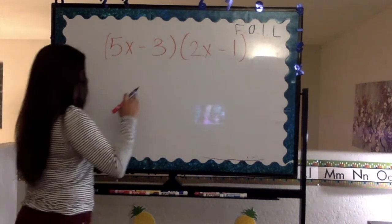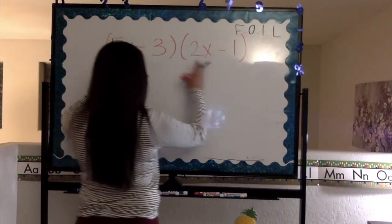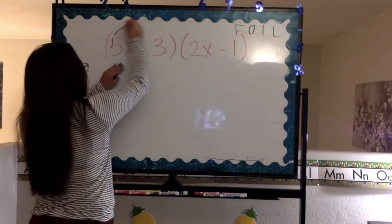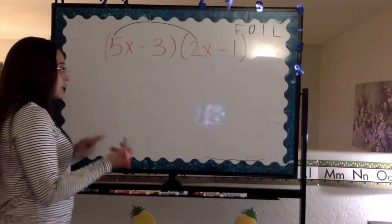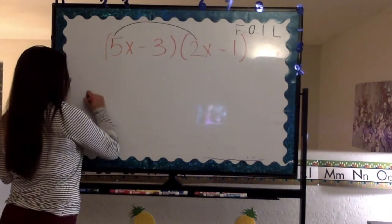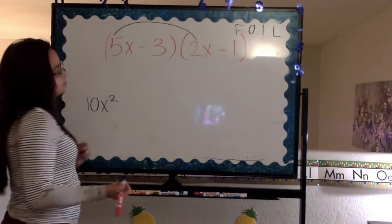F stands for first. We have 5x and 2x. So we're going to start off by multiplying these two. That will give us 10x squared.